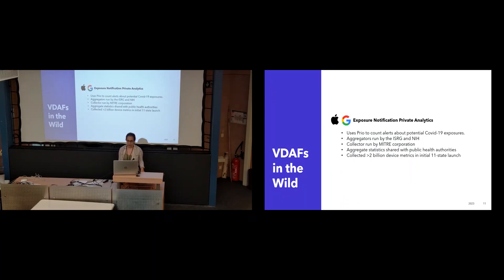So there are some already existing examples of verifiable distributed aggregation functions in the wild. And the most prominent is PRIO, which was developed by Dan Bonet and Henry Corrigan Gibbs. And PRIO is a generic system for collecting simple statistics about typically numerical data.